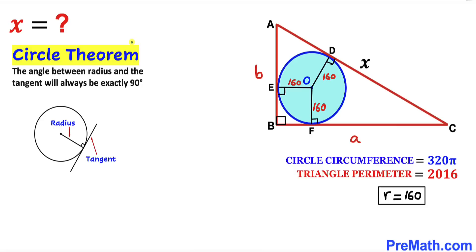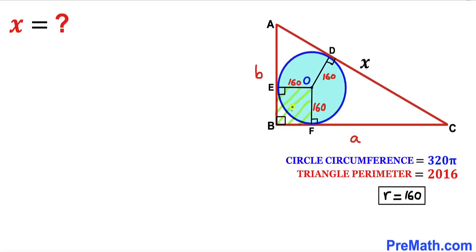Let's recall the circle theorem: the angle between a radius and a tangent line is always 90 degrees. So all these angles are 90 degrees, since these are all tangent lines. Now let's focus on square B, F, O, E. All its side lengths are equal, so each side length is 160. In particular, side length EB is 160.